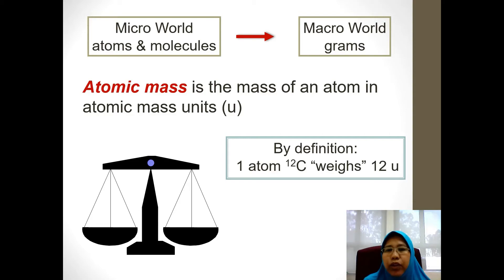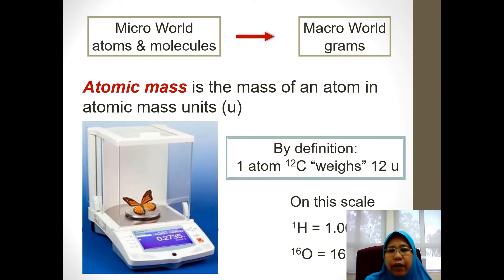For one atom carbon-12, its mass is as much as 12 atomic mass units, the same as hydrogen 1 unit, oxygen atom 16 units. We have to convert it into a unit whereby we want to weigh it on that weighing scale. As you can see, the butterfly there is very light, so let's look at the next part.